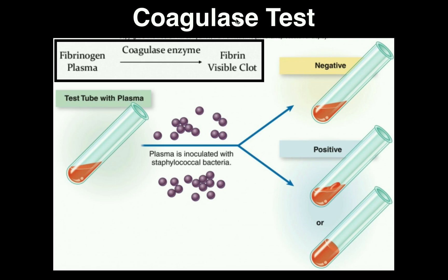So what is coagulase? Before we talk about coagulase, let's talk about your normal clotting system in your body. You know intuitively that if you get cut anywhere on your body, you bleed because you're exposing your internal environment — that is the inside of your vasculature — to the external environment, so blood leaks out.